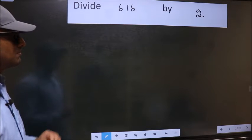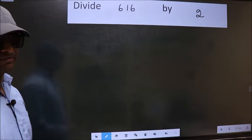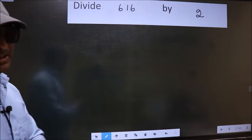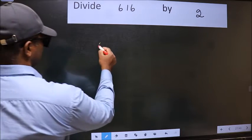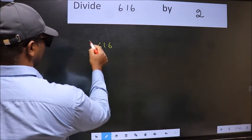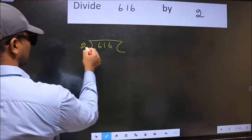Divide 616 by 2. To do this division, we should frame it in this way. 616 and 2 here.